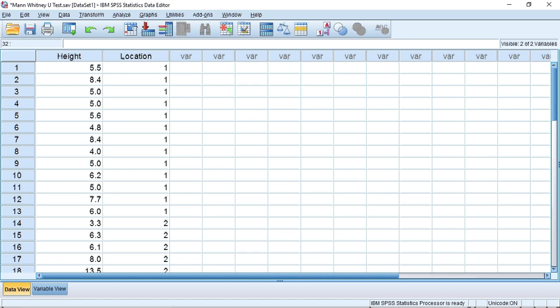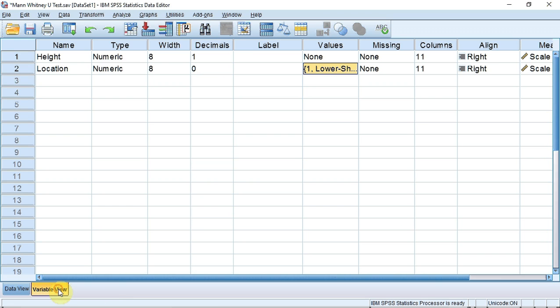One of the things we can do is give data labels to these numbers. If we go down to variable view, you can see the data labels that I have already entered. I'm going up to location and values, and I'm going to click.